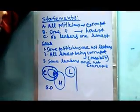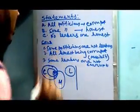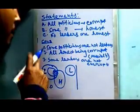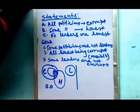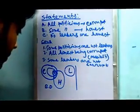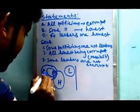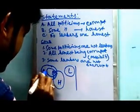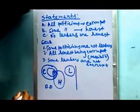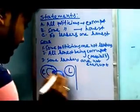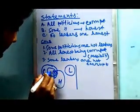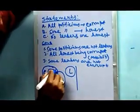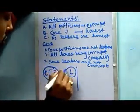Now the modified diagram based on the conclusions. Conclusion 1 states: some politicians are not leaders. From the basic diagram, the leader circle and politician circle are completely separate from each other, so Conclusion 1 is correct — it follows.